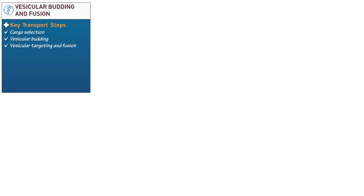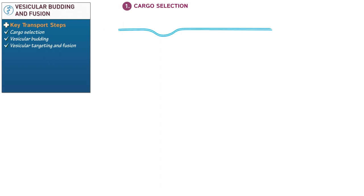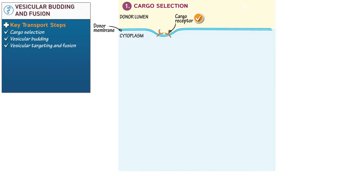To begin, let's illustrate step one: cargo selection. First, draw a phospholipid bilayer as two lines bending inwards. Label the bilayer donor membrane, the donor lumen above it, and the cytoplasm below it. Next, draw cargo receptors on the curved portion of the membrane. Show that they bind soluble cargo — they specifically bind the signal sequences of secretory proteins that are sorted for export from the donor compartment.